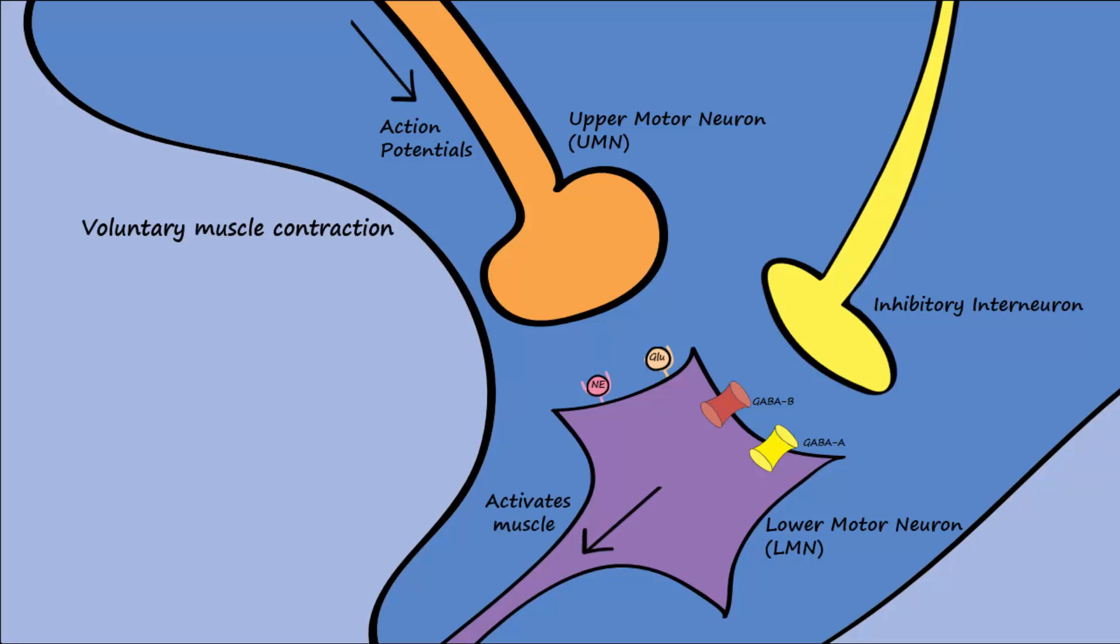The inhibitory neurotransmitter GABA is released from the inhibitory neuron and acts to decrease the excitation of the LMN by increasing chloride permeability in the LMN.